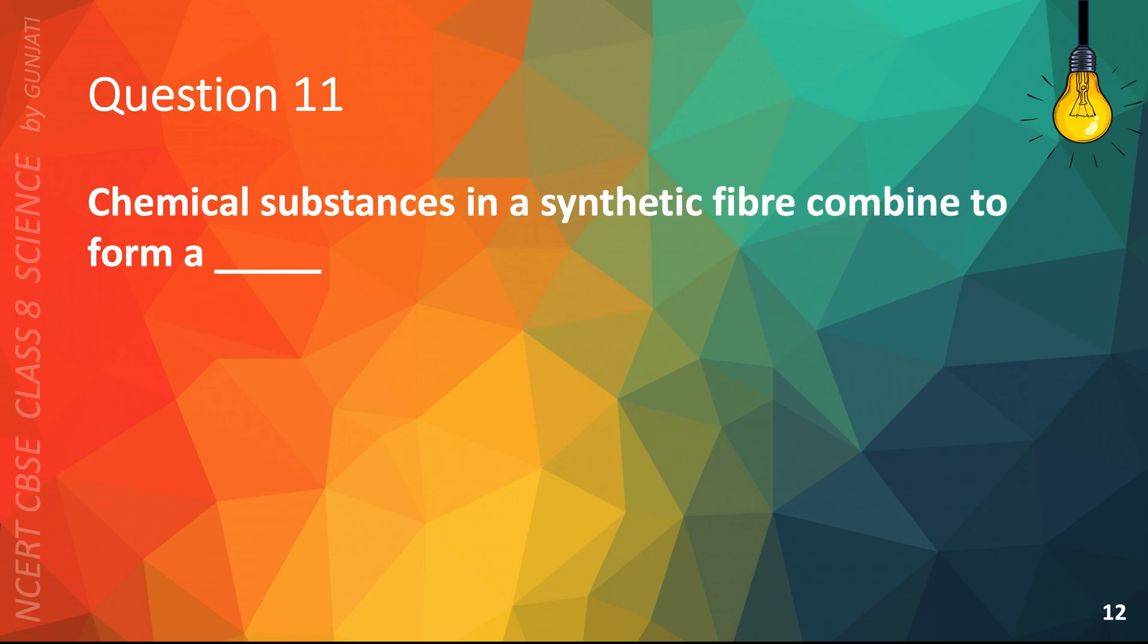Question 11. Chemical substances in a synthetic fiber combine to form A. Das, B. Oxygen, C. Polymer, or D. Polyester. The correct answer is C. Polymer.